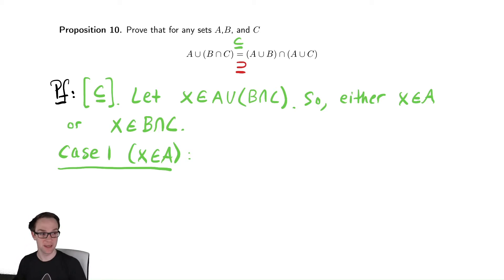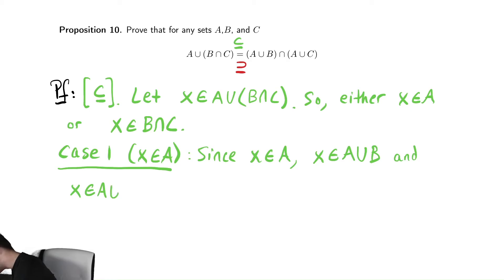I want to now be able to claim that it is in the right-hand side. So, if I know x is in A, since x is in A, x must be in A union B, by the definition of union, and x must be in A union C, again, by the definition of union. In order to be in a union, it must be in one of the sets. We already know it's in A, so it's definitely in one of those sets.